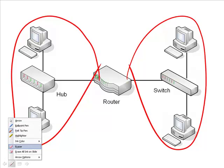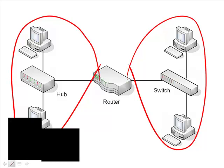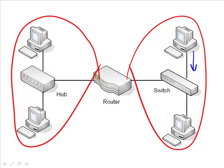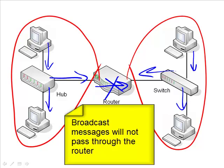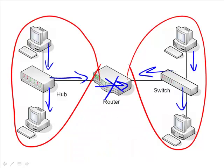If we look at each of the broadcast domains — and we'll take a different color here — if this PC sources a broadcast message, the switch is going to forward it out every connected port, and the hub will do the same thing, forwarding it out each port as well. However, the router is not going to allow that broadcast frame to cross over, and it's the same thing in the other direction from the switch. Switches can also be configured to use multiple VLANs, so there are more options available with a switch when it comes to broadcast domains, but generally speaking, switches only create a single broadcast domain.